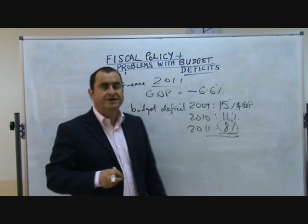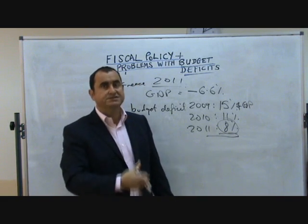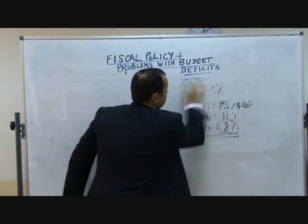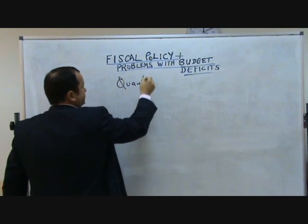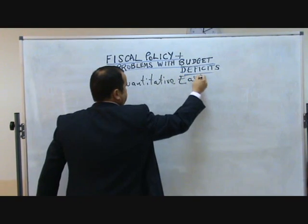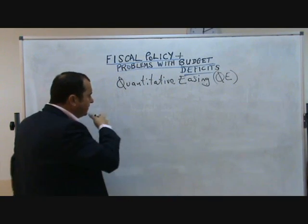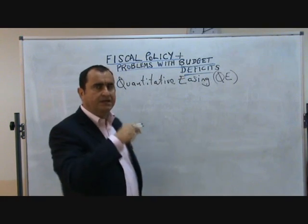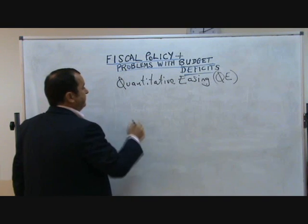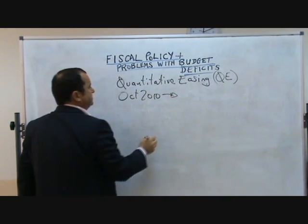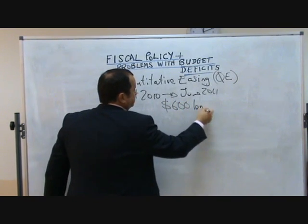Now, two other governments have chosen a slightly different route rather than relying on the selling of bonds to finance their overspending. They're doing a thing called quantitative easing — I'm talking about the US government and the British government. The US did a lot of quantitative easing back in 2009, and as of the start of May 2011 they're in the middle of another bout. From October 2010 through to an expected end of June 2011, they are doing $600 billion worth of quantitative easing.